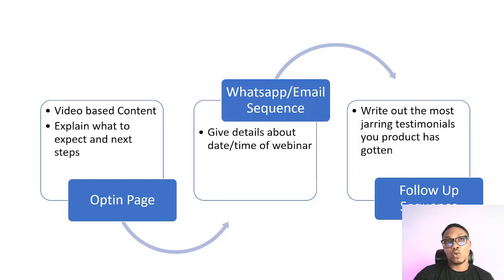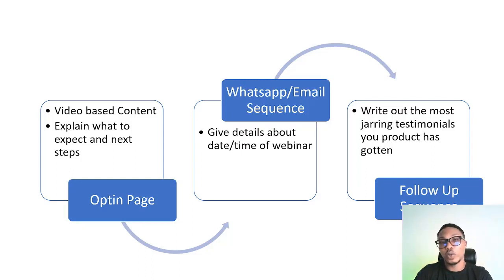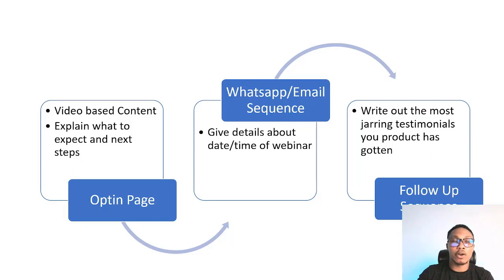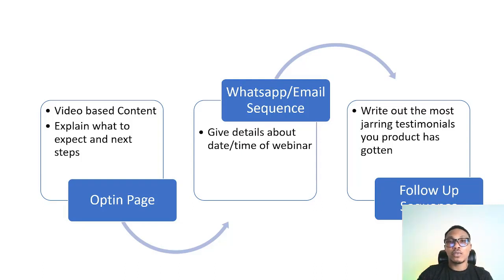With your WhatsApp or email sequence, what you should essentially be doing is give them the details about the date and time of the webinar. Because, like I was explaining earlier, a webinar funnel is going to be the best type of funnel for this sort of leads. I'm going to go deeper to show you exactly how to put together this sort of sequence.